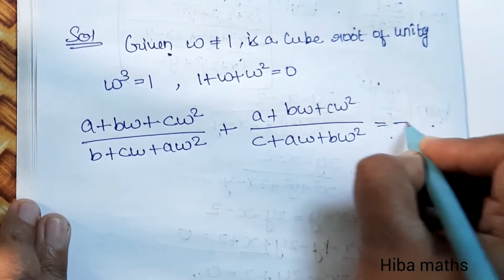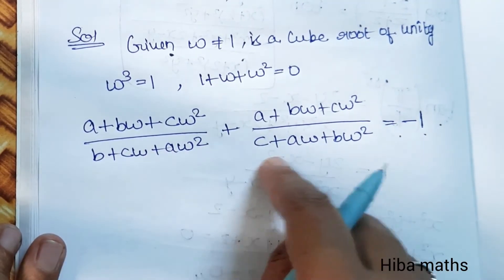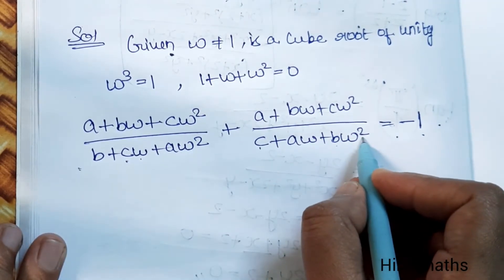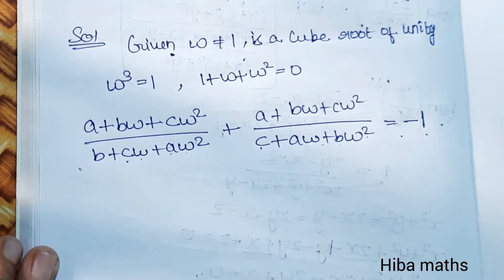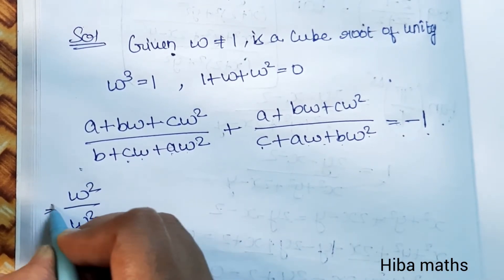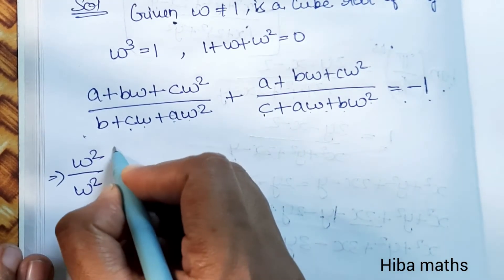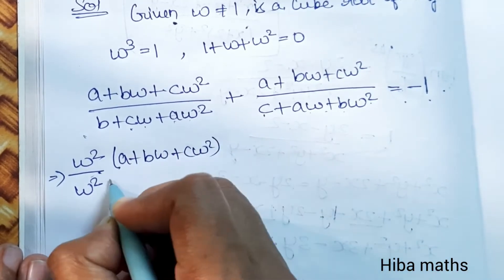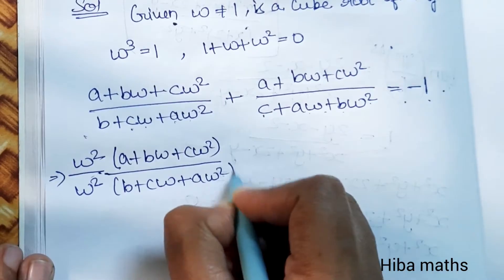Let's do this proof. The denominator has terms: C·omega and B·omega squared and A·omega squared. The first term multiplied by omega squared gives: omega squared into (A plus B·omega plus C·omega²) divided by (B plus C·omega plus A·omega²).